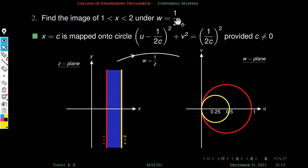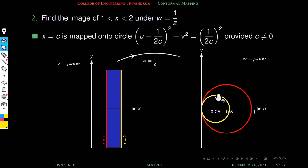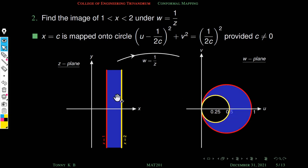Since w = 1/z is conformal everywhere except z = 0, this transformation maps the blue region between the two straight lines onto the region between the two circles in the w-plane.